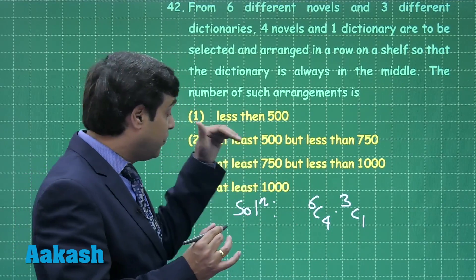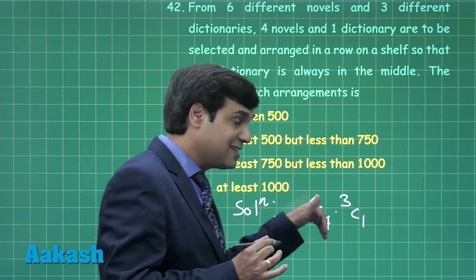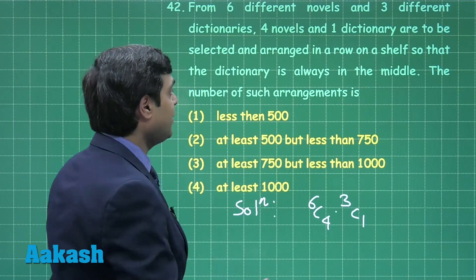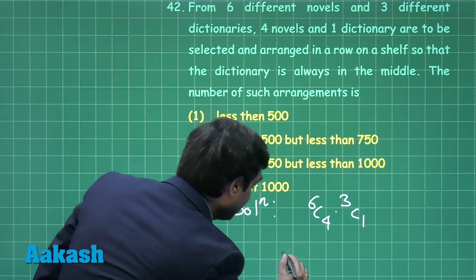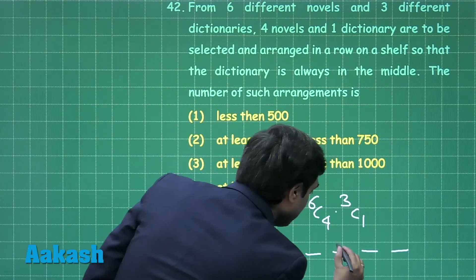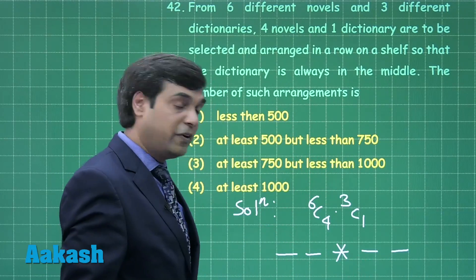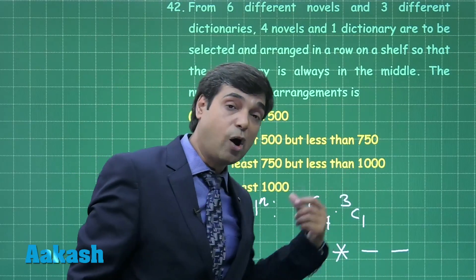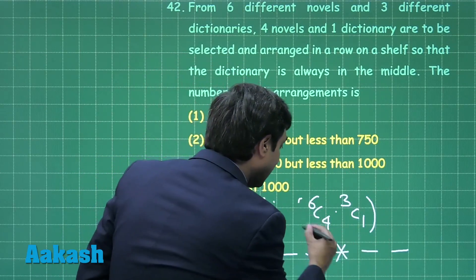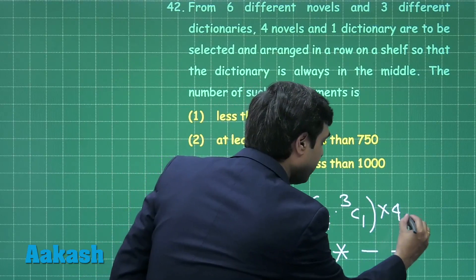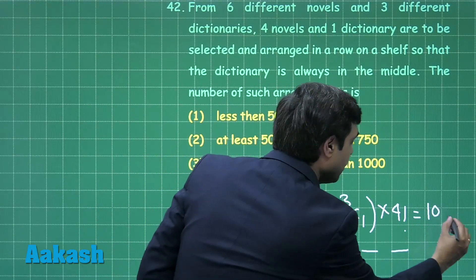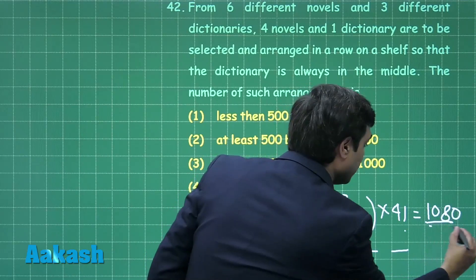Now the question says we have to arrange these selected articles in such a way that the dictionary is always in the middle. So the dictionary is fixed. We have to arrange the remaining 4 novels, which can be done in 4! ways. The required result simply comes as 1080.